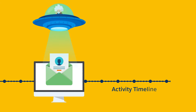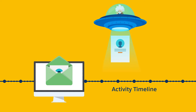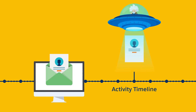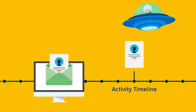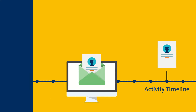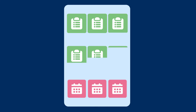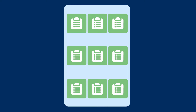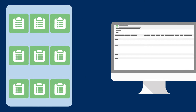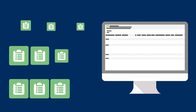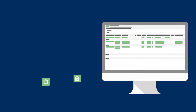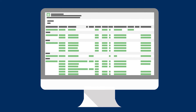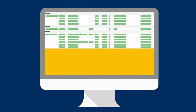When your sales reps interact with customers, their emails, events, and contacts are added to the activity timeline of related records. Updates to those communications are automatically reflected in Salesforce, saving your team the hassle of making manual changes.